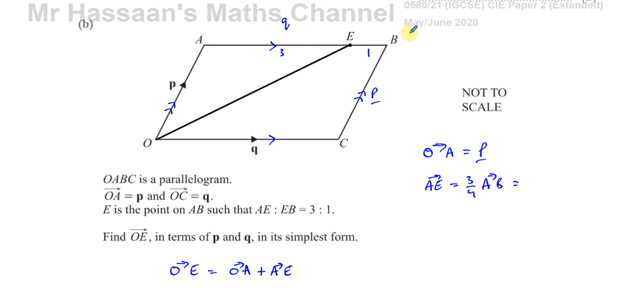And as we just stated, AB is the same as the vector Q, because this line is the same length and parallel to OC, because this is a parallelogram. So AE would be 3 quarters of Q. So now we know what to put here, OE is going to be OA, which we know is P, plus 3 quarters of Q.